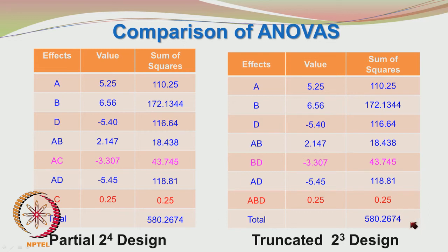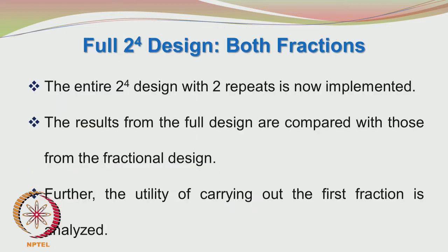The total sum of squares is also identical. Essentially the truncated 2³ design is telling us the same thing as the partial 2⁴ design, but giving prominence to the aliased factors involving B and D and ABD because C is no longer in the picture. That was a brief interlude which you can do without doing any additional runs using statistical software. I used Minitab here.